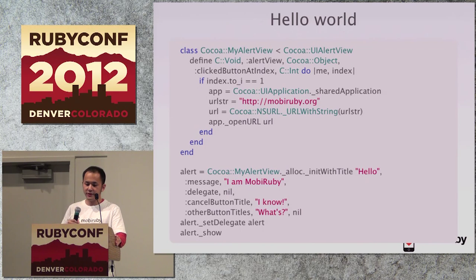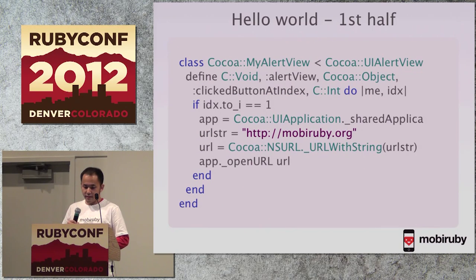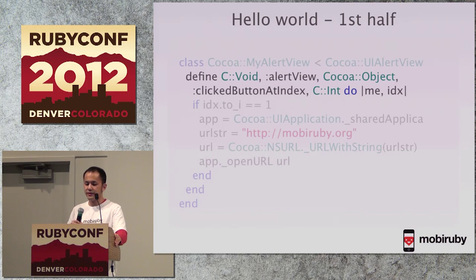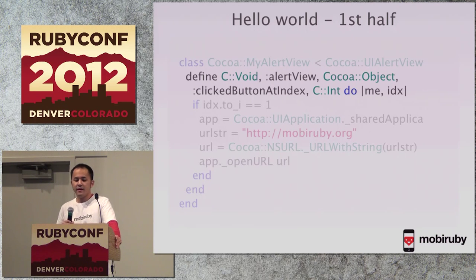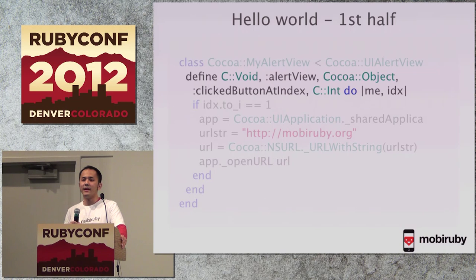Here is the Hello World code. iOS developers can understand this sample code — it's really similar to Objective-C. In the first half, the code defines a new class, MyAlertView, which inherits from UIAlertView, a Cocoa class. Then it defines new delegate methods using define_method. Ruby does not support keyword arguments yet — that's a 2.0 feature. And mRuby's hash is non-ordered, the same as Ruby 1.8.